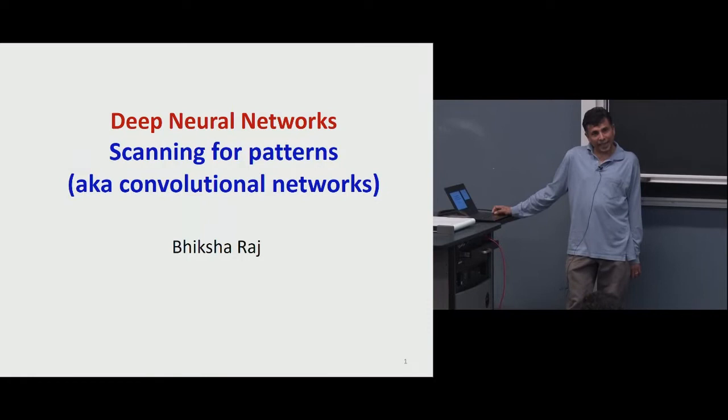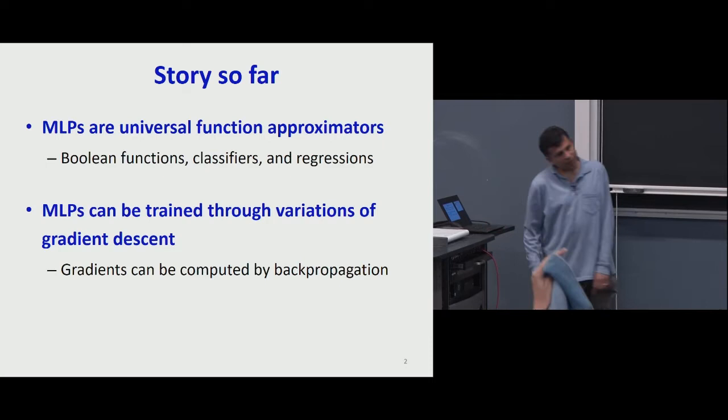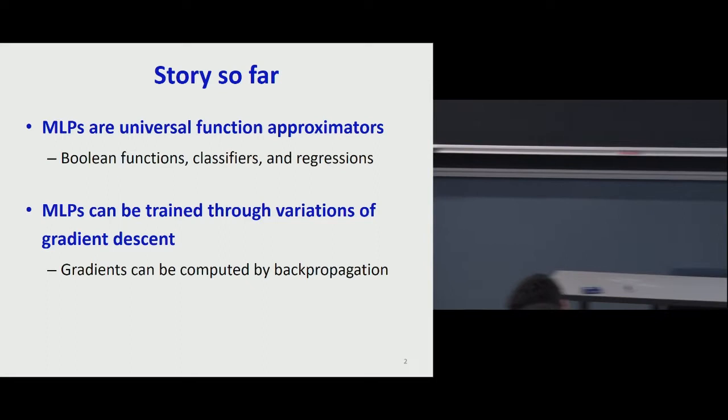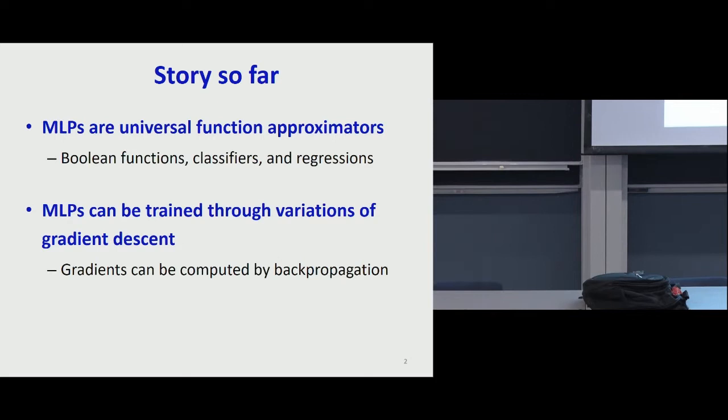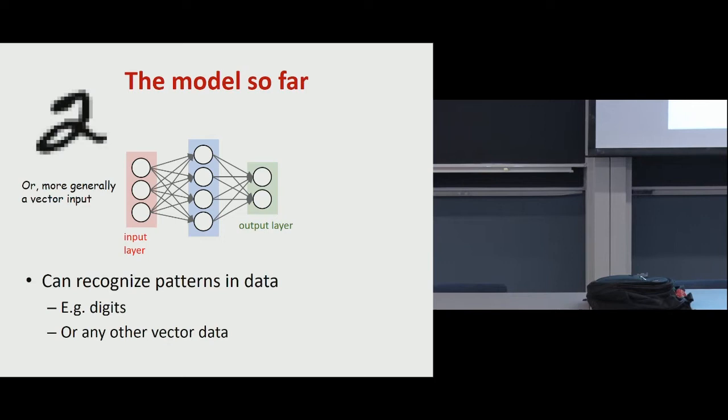We're going to move on and talk about scanning. The story so far: we've seen that multilayer perceptrons are universal function approximators — Boolean functions, classifiers, regressions — and they can be trained through variations of gradient descent.